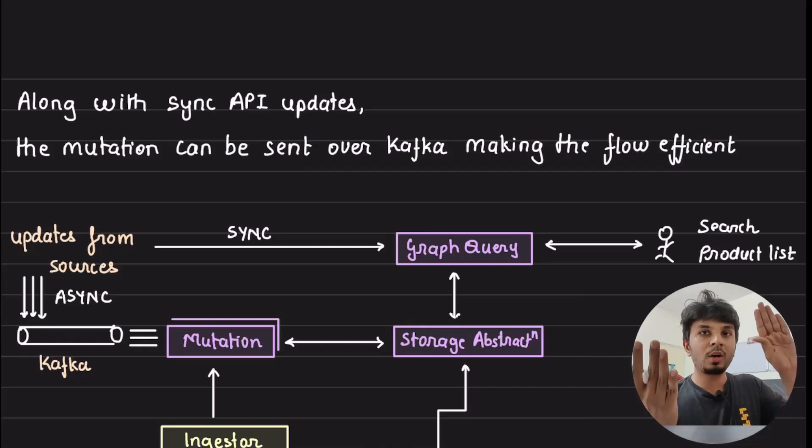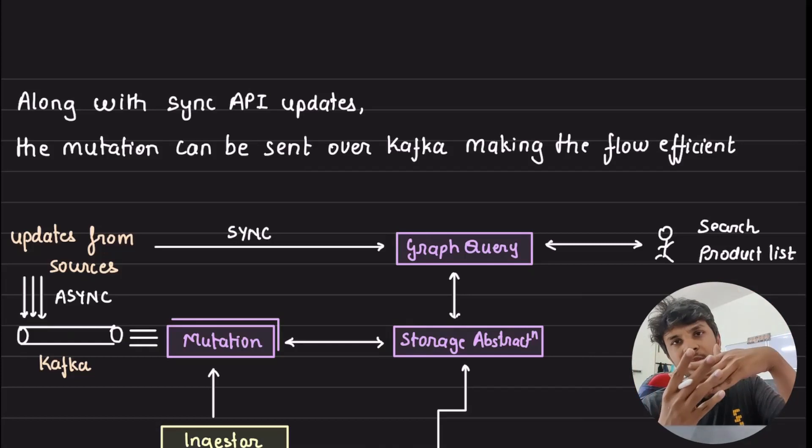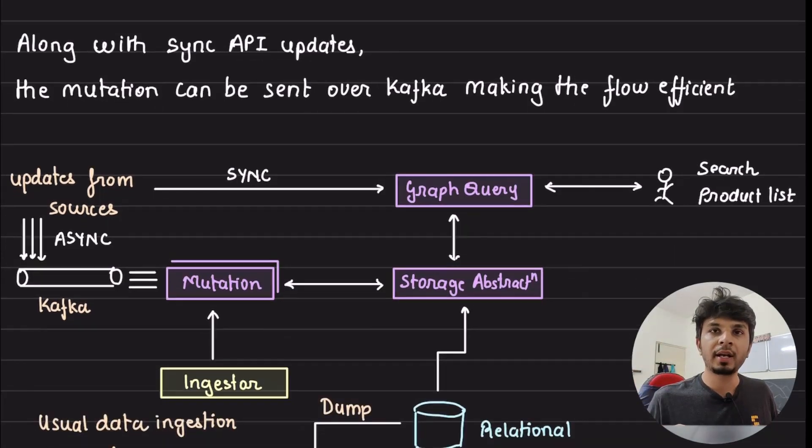To do bulk updates, then you might also want to expose a bulk endpoint and whatnot. Keep it extremely simple. Let it happen over Kafka because in Kafka, messages would remain persisted. They would ingest the data slowly. It would be consumed and the knowledge graph would be updated.